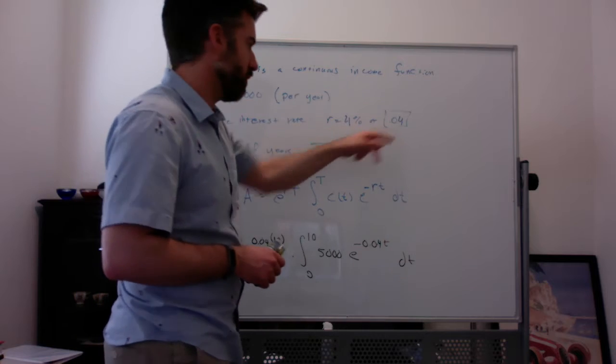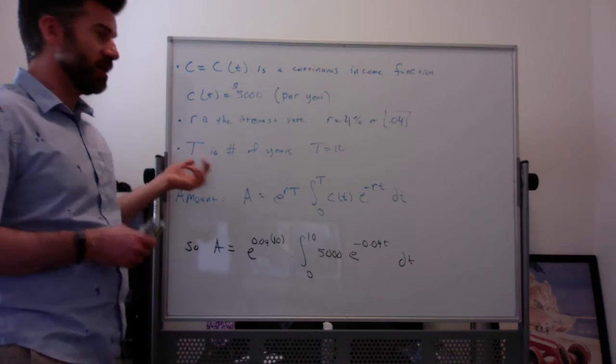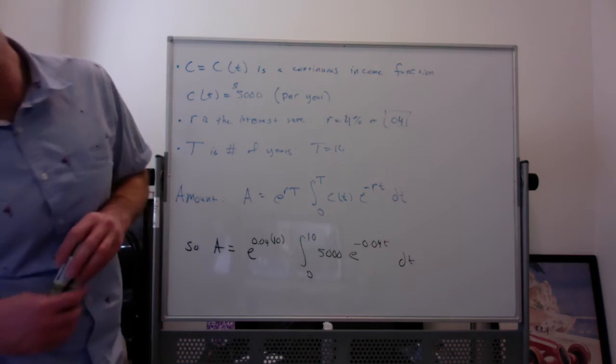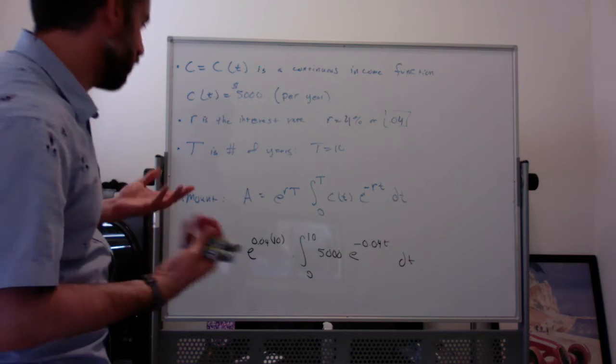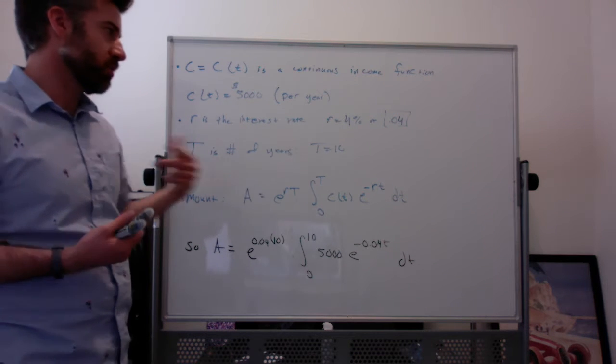so if it's 4%, then the decimal will be 0.04. And capital T is the number of years that you earn, T is the term of the annuity, number of years. So I'm saying T equals 10.